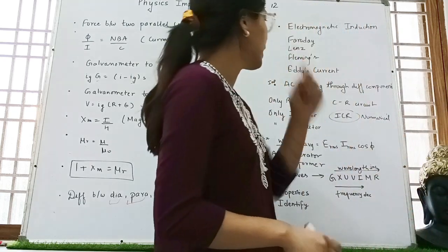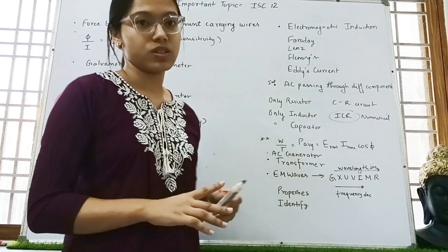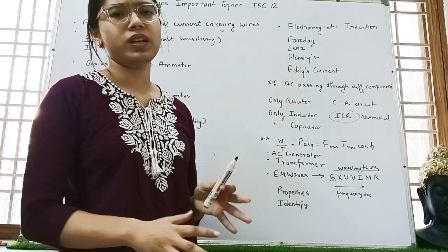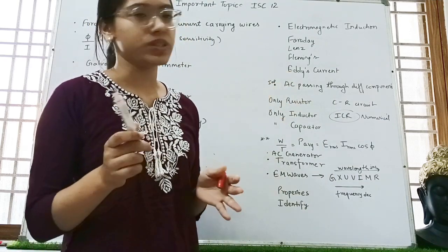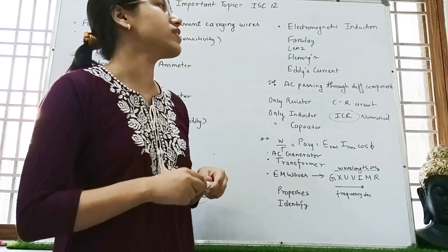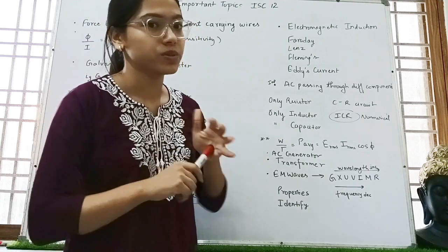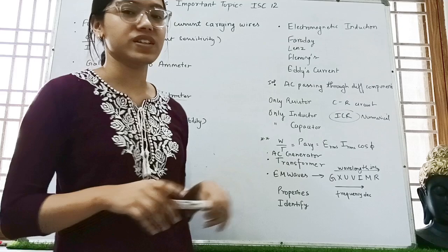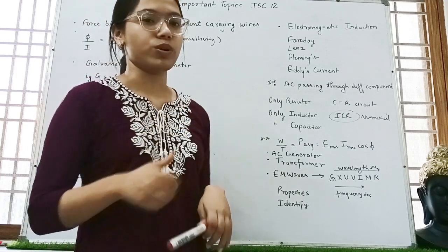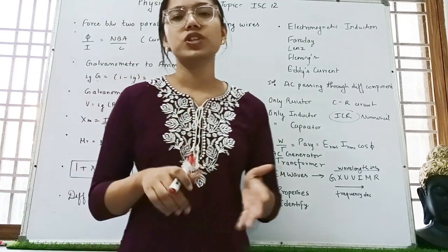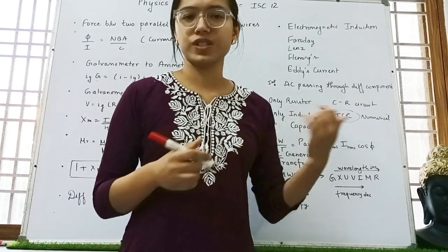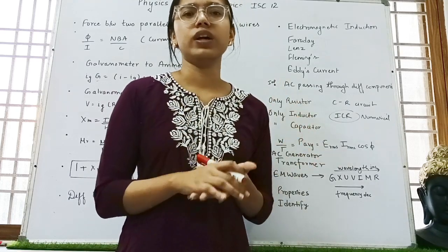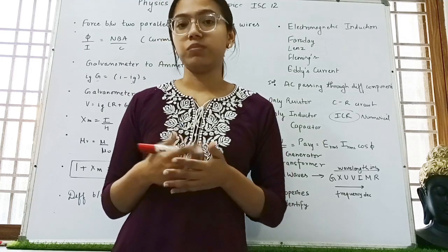Difference between diamagnetic, paramagnetic and ferromagnetic. Then we have electromagnetic induction. In this you will have to complete all these topics. You can't skip anything. Faraday's law, Lenz's law of Fleming's, left hand rule, right hand rule. Then Eddy's current. You should know about the thumb rule also. You have done this times also. Plus you can watch videos of physics wallah. That is really very good. Even I referred to that when I was in my 12th.